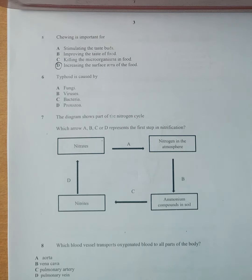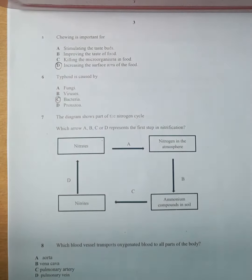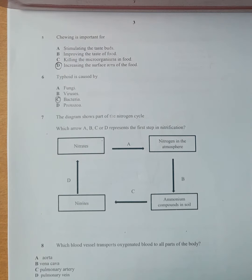Number 6 is reading: typhoid is caused by... We are going to select C as our answer, which is bacteria. Typhoid is caused by the bacteria known as Salmonella typhi. It is usually spread through contaminated food and water. Make sure that you understand diseases caused by fungi, viruses, and protozoa.